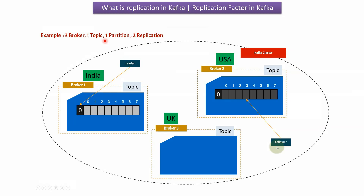In Scenario 2, there are three brokers, one topic, one partition, and the replication factor is 2. Since the replication factor is 2, Partition 0 will be available in another broker. Partition 0 is available in Broker 1, which is called the leader, and also in Broker 2, which is called the follower. All read and write operations will happen in Partition 0 of Broker 1, and all the data will be passively replicated to Broker 2's Partition 0, which is the follower.